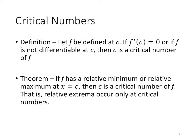Critical numbers — there is a separate lecture on critical numbers on my YouTube channel. But for now, here's the definition: let f be defined at c. If f'(c) = 0, or if f is not differentiable at c, then c is a critical number of f. Something important happens at this c value if the derivative is zero or if the derivative does not exist. A theorem follows: if f has a relative minimum or a relative maximum at x = c, then c is a critical number of f. That is, relative extrema occur only at critical numbers — that's why they're critical. To find relative extrema we need to find where the derivative is zero or the derivative does not exist.